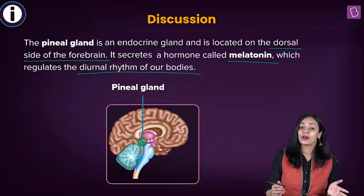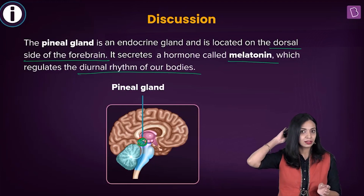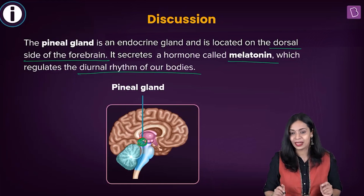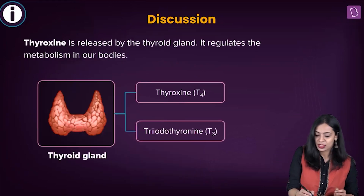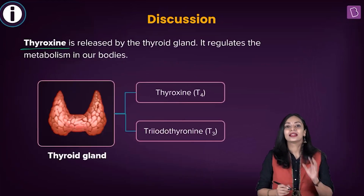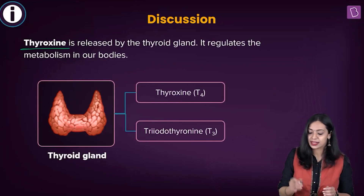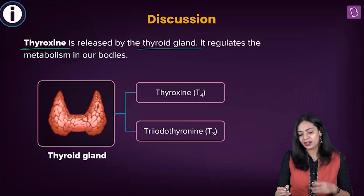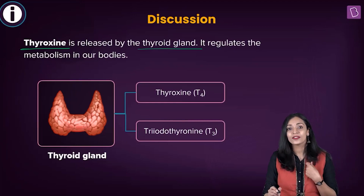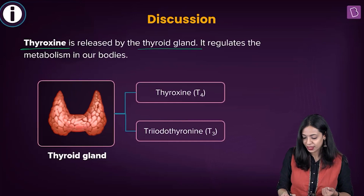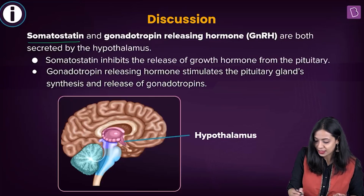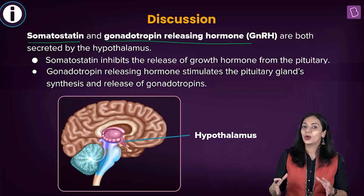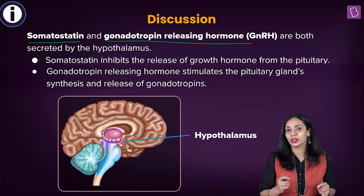The pineal gland is present on the dorsal side of our forebrain — dorsal refers to the back side. The other options include thyroxin, also known as tetraiodothyronin, which is produced by the thyroid gland and is involved in regulation of body metabolism. Somatostatin and gonadotropin releasing hormone are the other two options; both of these hormones are released by the hypothalamus.